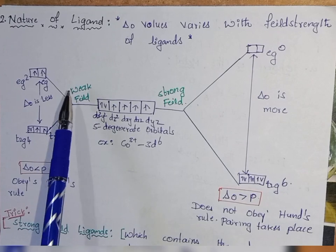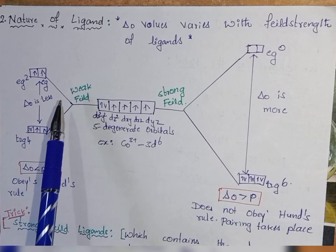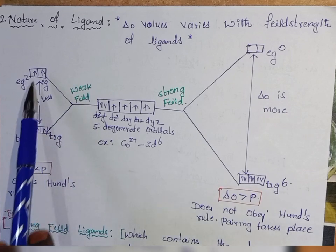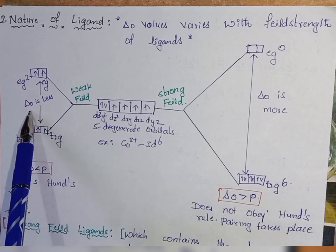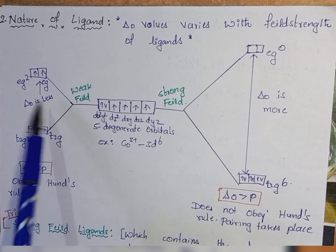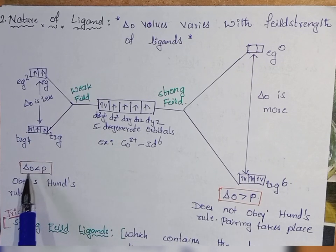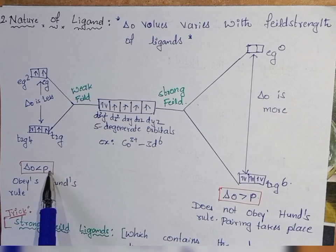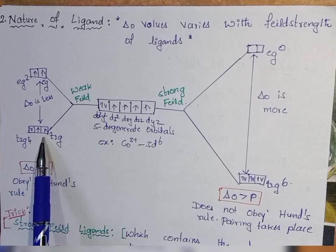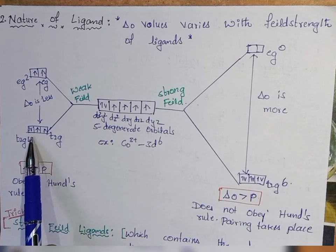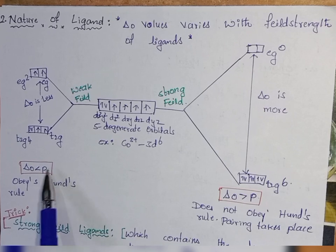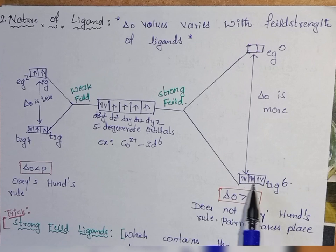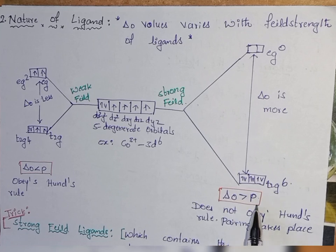If the metal ion has weak field ligands, it will form high spin complexes and the interaction will be less, therefore the repulsion will be less, and the energy gap between energy levels will be less — meaning delta O will be less. In weak field complexes, delta O is less than the pairing energy, so electron filling takes place according to Hund's rule and pairing does not occur easily. In strong field complexes, pairing takes place easily, and the crystal field splitting energy delta O is greater than the pairing energy.